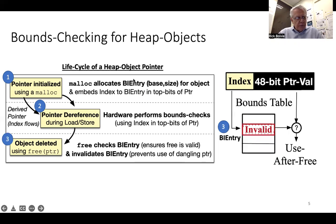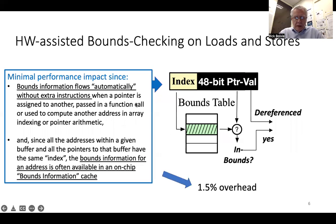Still later, when an object is deleted, after ensuring that the free is valid, we invalidate that particular entry in the bounds information table so that we can detect use-after-free problems. A couple of nice things about this scheme: we have minimal performance impact since the bounds information flows automatically without extra instructions when a pointer is assigned to another, passed in a function call, or used to compute another address in array indexing or pointer arithmetic.